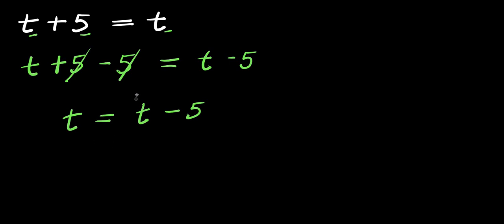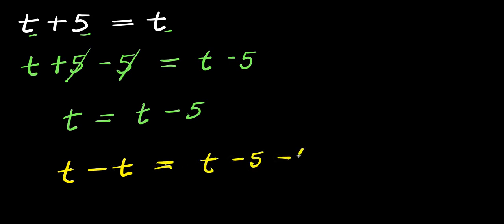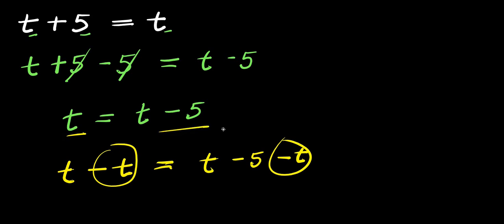Now right here I can also decide to subtract t from both parts of this equation again. So I'm going to have t minus t, subtracting t from both sides. So t minus t is 0, equals t minus t here again, which is 0, so this is negative 5.